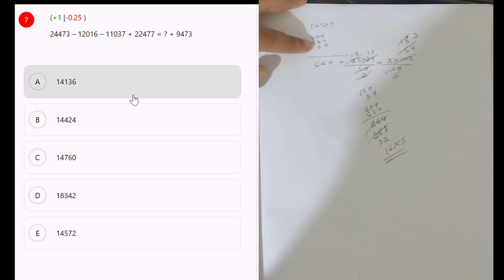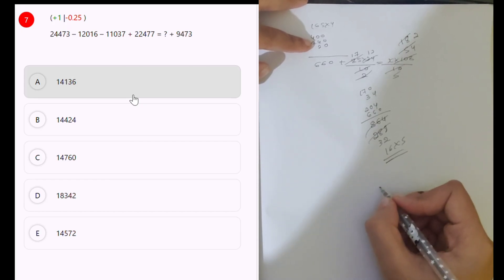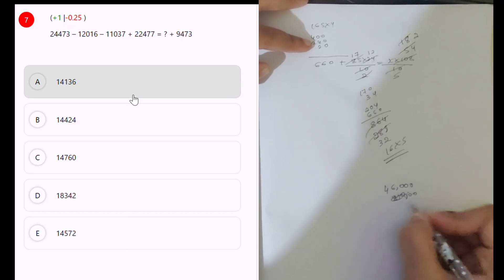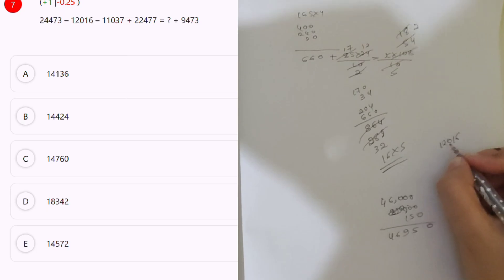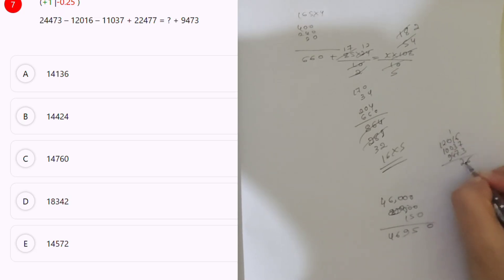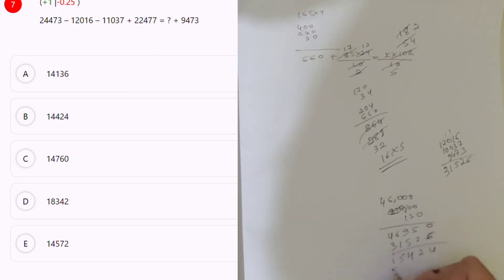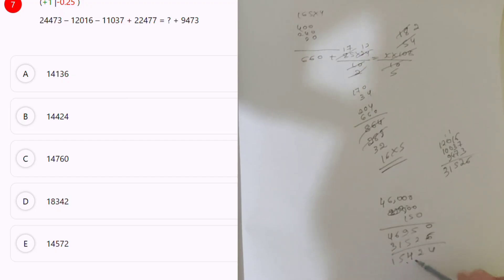8 is the answer. Okay. 24,473 and 22,000. 22,000 plus 24,000 is 46,000. And 800 is 46,800. Next: 73 plus 46,950. 12,050, 12,016 and 11,037. 9,473. 10, 16, 10, 12, 5, 9, 10, 11. 3, 1, 5, 2, 6. And 4 and 4, 2, 2, 9, 5, 9, 5, 4. And 6, 1, 5 and 1, 5, 4, 2, 0. 1, 5, 4, 2, 4 — 4, 2, 4. 1, 4, 4, 4, 2, 4 I think.